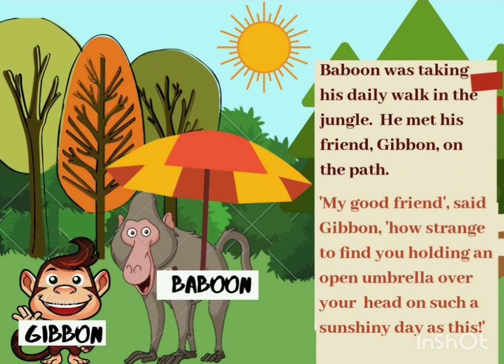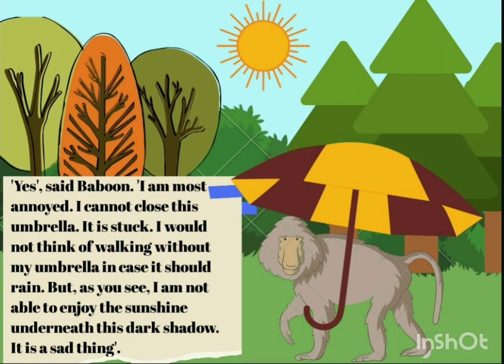Gibbon wanted to say that it was a pleasant day — the sun was shining brightly, so you should enjoy the sun. And why are you carrying this umbrella? Now Baboon is replying. Yes, said Baboon, I am most annoyed. I cannot close this umbrella — it is stuck. Here, annoyed means troubled or irritated by something. Why was Baboon irritated? He was not able to close his umbrella because it was stuck; he was unable to move it. So this was the problem with Baboon.